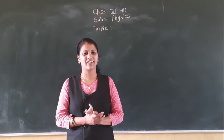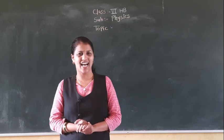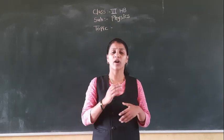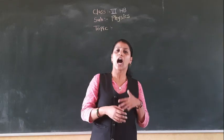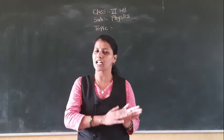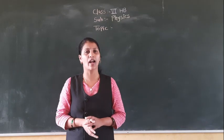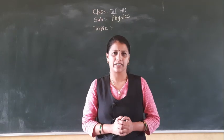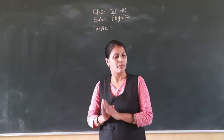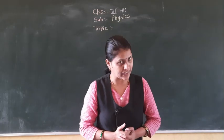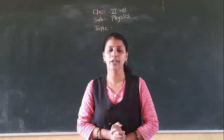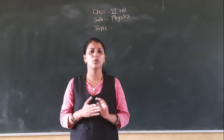Good morning, my dear students. We are back with our physics lecture. In the last video we discussed about magnetism — what are the properties of magnetism. We learned how the magnet was discovered. There are mainly two types of magnet: natural magnet and artificial magnet, also called a human magnet. We discussed properties of magnets, how to make a magnet, and how to take care of it. If you do not take care of the magnet you can lose its magnetism.